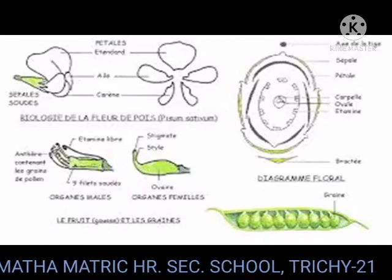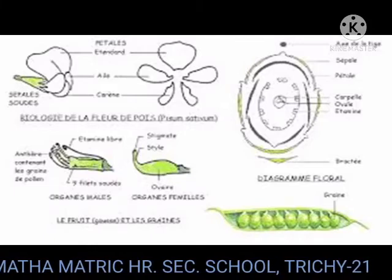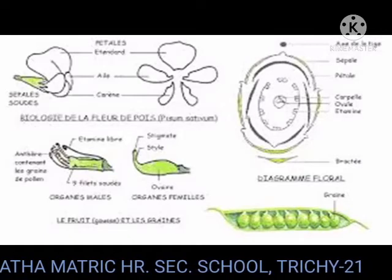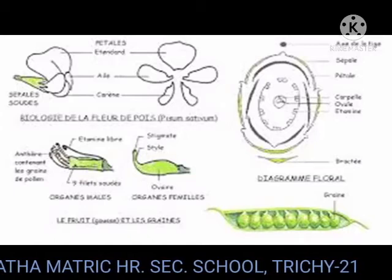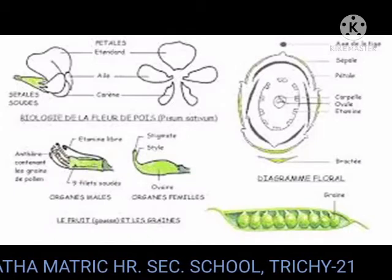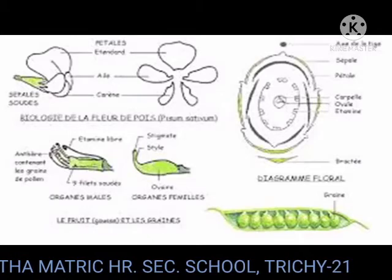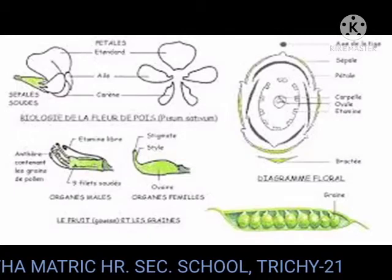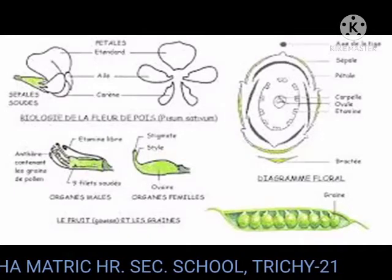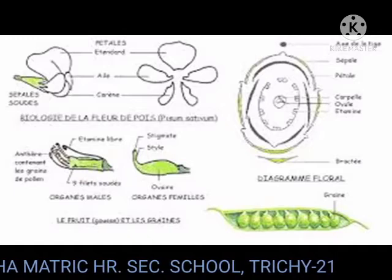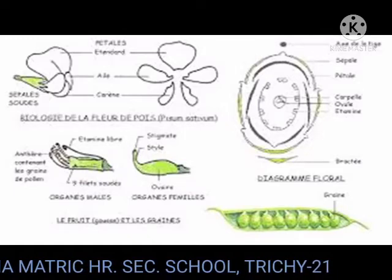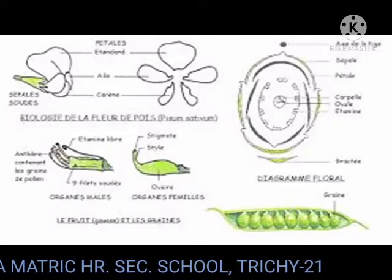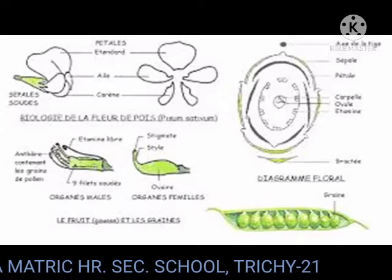Gynaecium: monocarpellary — mono means it is having only one, that is a single carpel — unilocular, with many ovules on marginal placentation. Superior ovary. Style simple and incurved with feathery stigmas. Fruits are legume and seeds are non-endospermous, reniform.